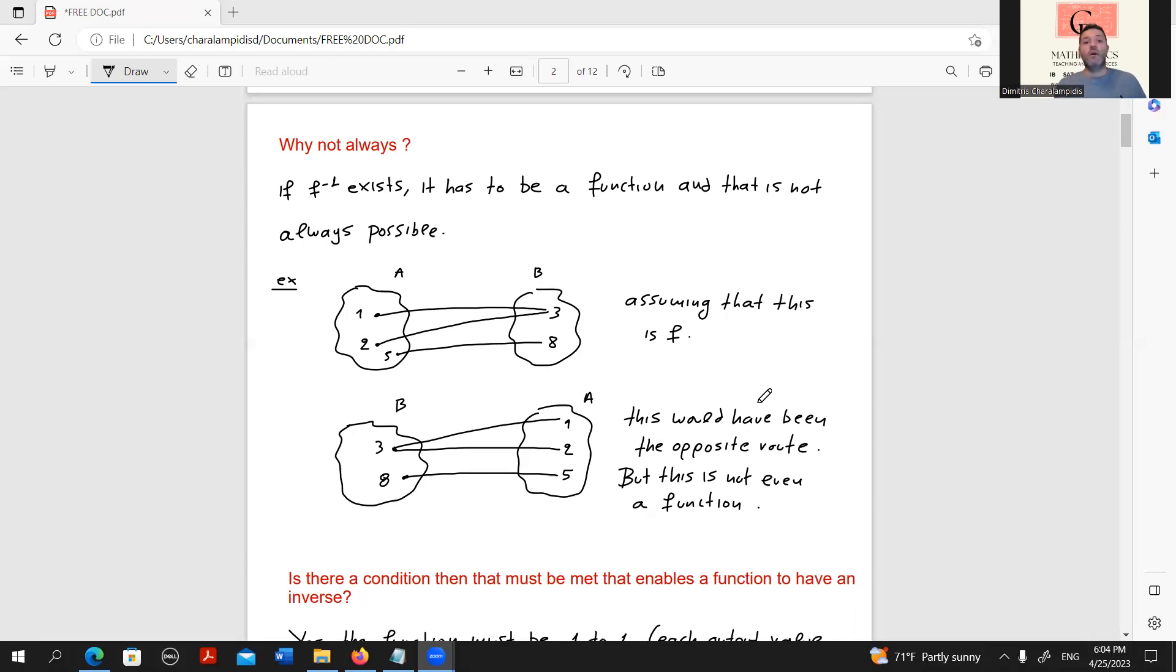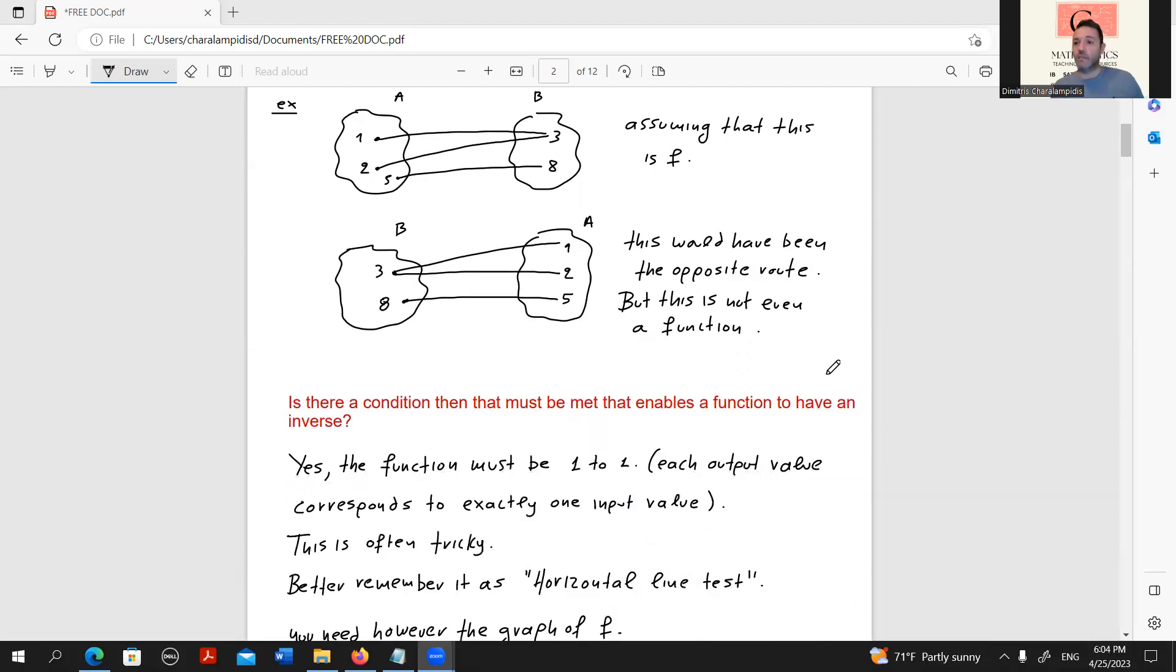Although the top one suggests a function, we can have two input values being related to one unique output value, but we cannot have the opposite. So the opposite direction would not have been a function. Therefore, we would say that no, this is not inversible.